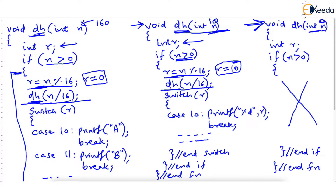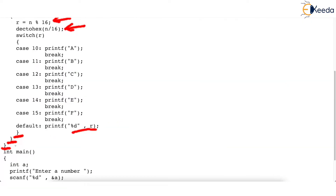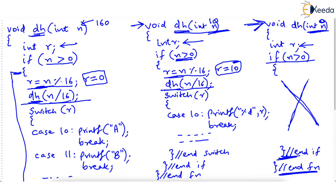Now the parameter N has a value of 0. When this function starts, R is declared as a local variable, but the if condition is false. The current value of N is 0, and 0 greater than 0 is false. So the entire if portion will be skipped — it won't be executed. The control comes out of the if without executing anything and the function ends. When dec_to_hex is called with parameter N equal to 0, the function simply terminates without performing any work because the if statement is false.